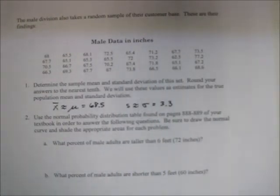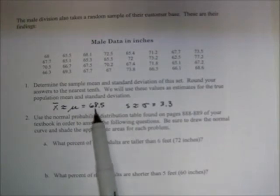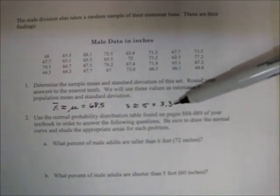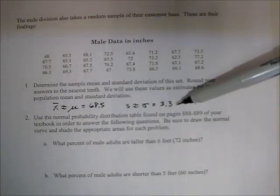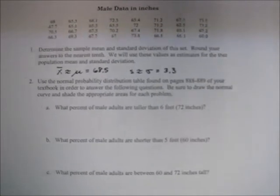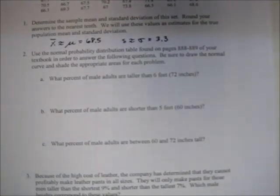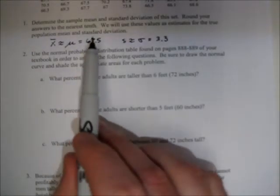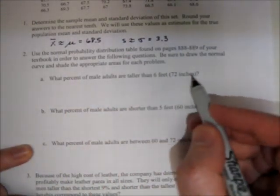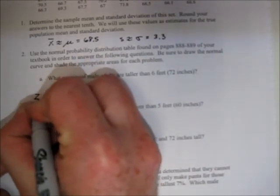Now moving on to the male data. The mean height is 68.5 inches and the standard deviation is 3.3 inches. The fact that the standard deviation is larger for the male data means that male heights are more spread out than female heights — there's a greater range. The problems are exactly the same structure; the only difference is that we have different mean and standard deviation values. For what percent of male adults are taller than six feet, we need a z-score.